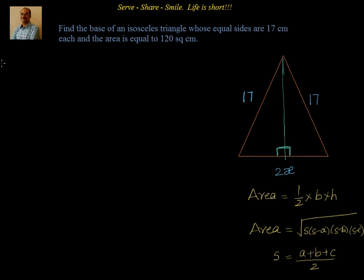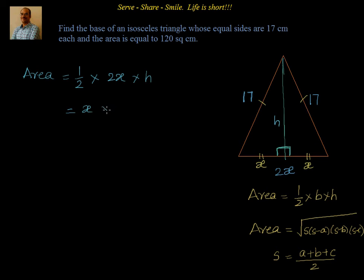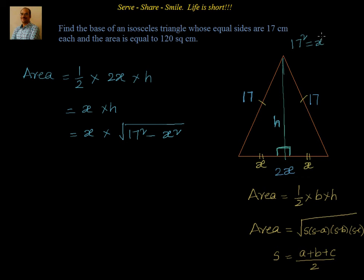Since the altitude is the perpendicular bisector in an isosceles triangle, we have a 90-degree angle there, and the base 2x is divided into two equal parts x and x. The height of the triangle we don't know, so we call it h. Now, area equals half into base 2x into height h, which simplifies to x·h. To express h in terms of x we apply the Pythagoras theorem: h = √(17² − x²), because 17² = x² + h².